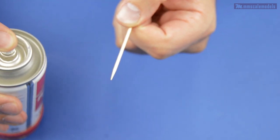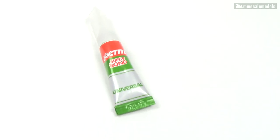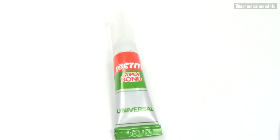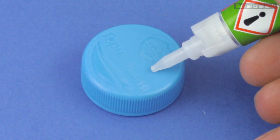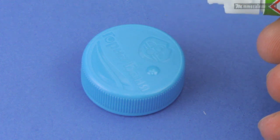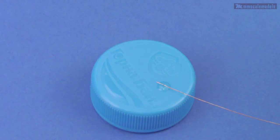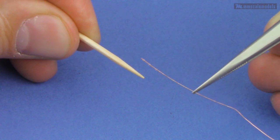Now let's put a drop of CA glue on a surface that will enable us to drag the end of the wire through the glue. And next we can carefully attach the end of the wire to the tip of the toothpick.